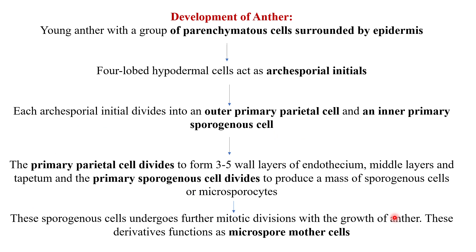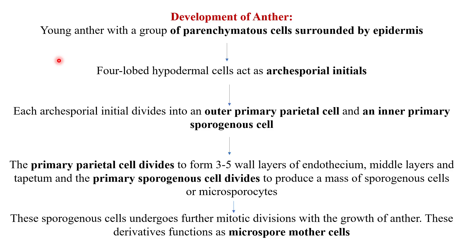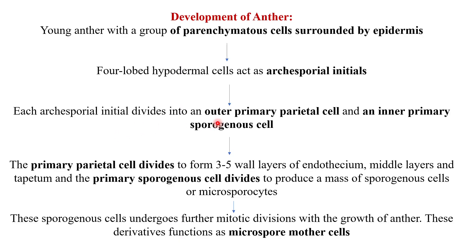In the development of the anther, the young anther has a group of parenchymatous cells surrounded by epidermis. The four-lobed hypodermal cells act as archesporial initials. Each archesporial initial then divides into an outer primary parietal cell and an inner primary sporogenous cell.